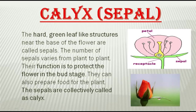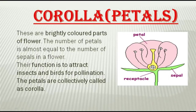Now what is the function of sepal? The second picture is of a rose bud — you can see the flower in the middle and the outside green structure, which is the sepal. When the flower is in bud condition, the sepal protects the flower and its inner parts. As it is green in color, it also helps in the preparation of food. So the functions of calyx are: to protect the flower in bud stage, and to prepare food for the plant. These sepals are collectively called calyx.